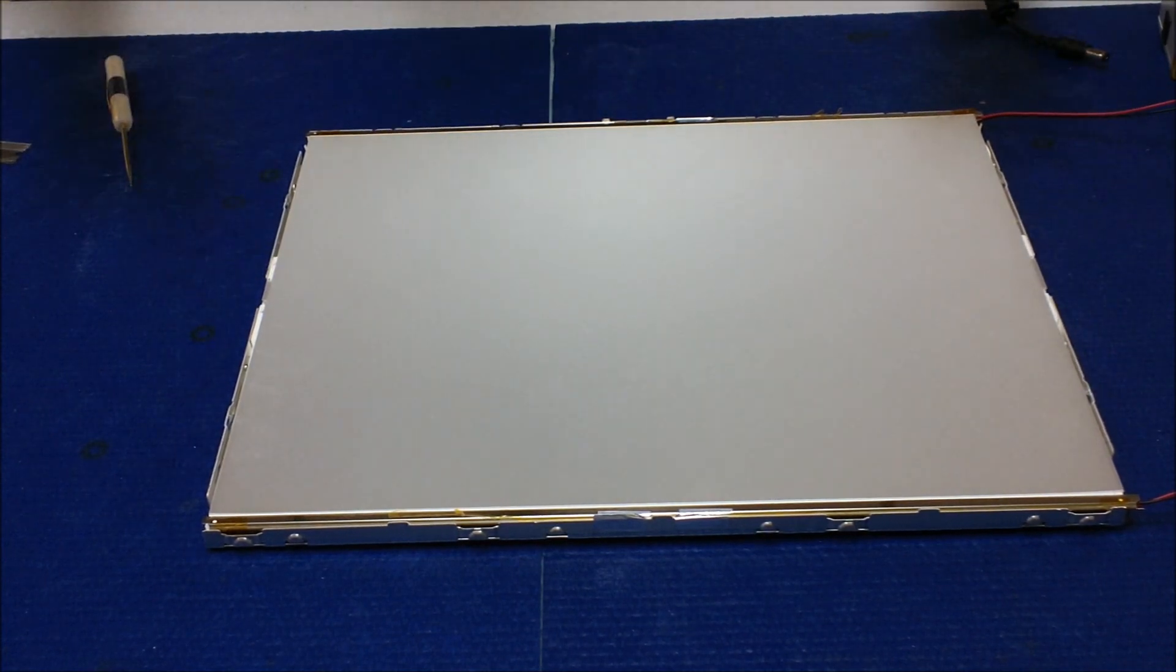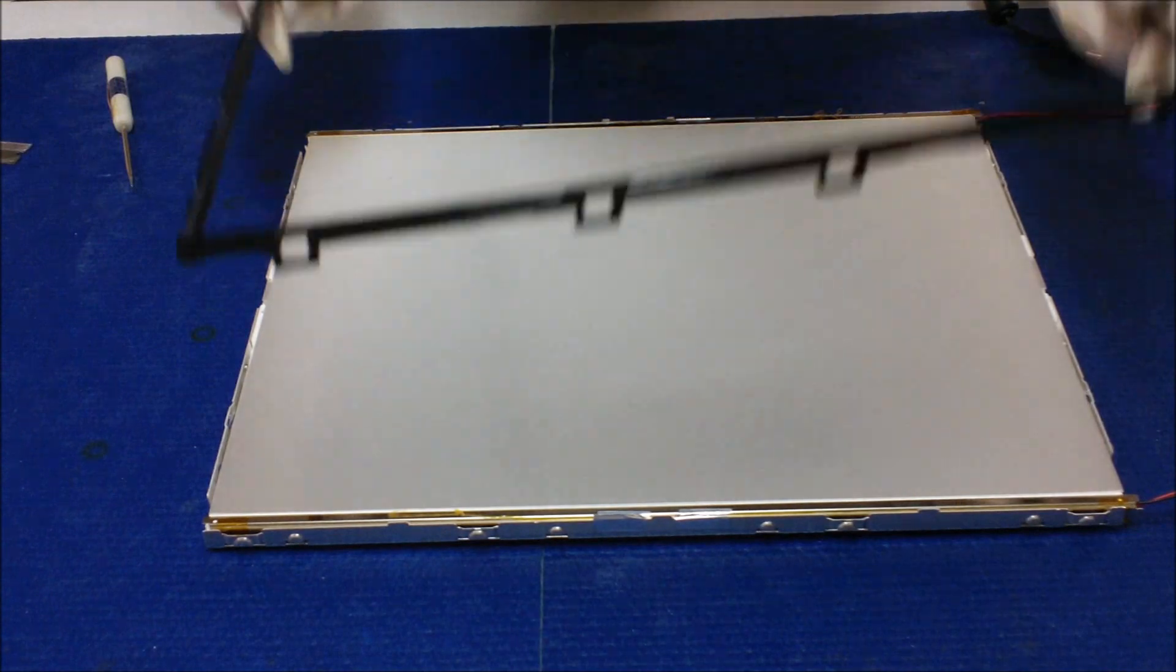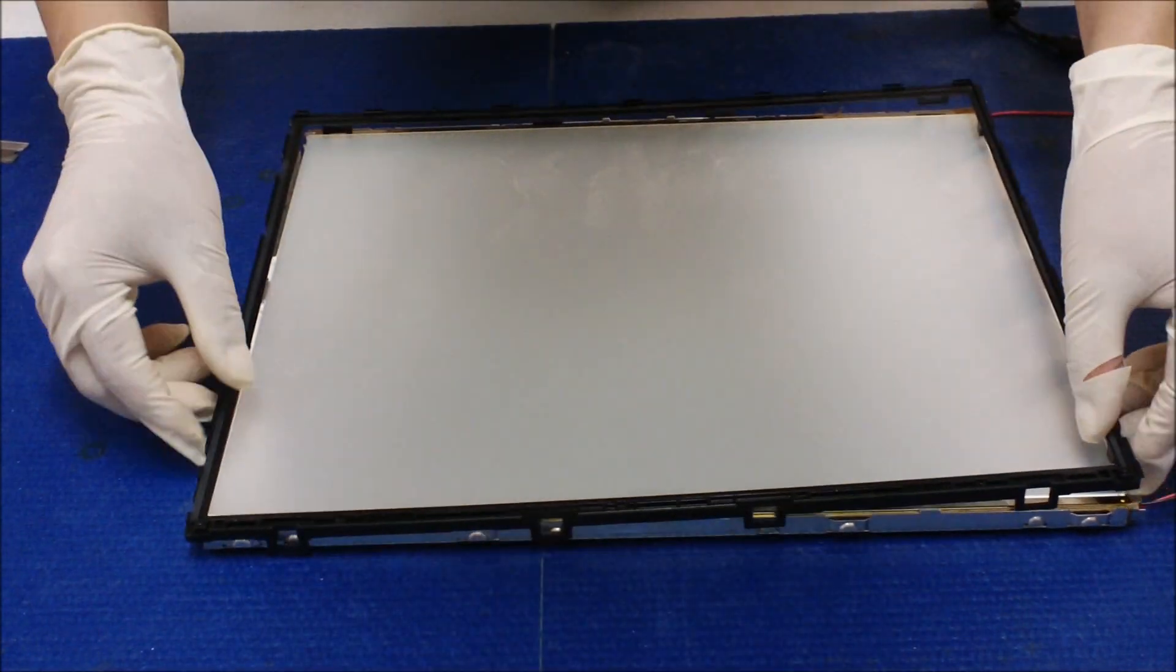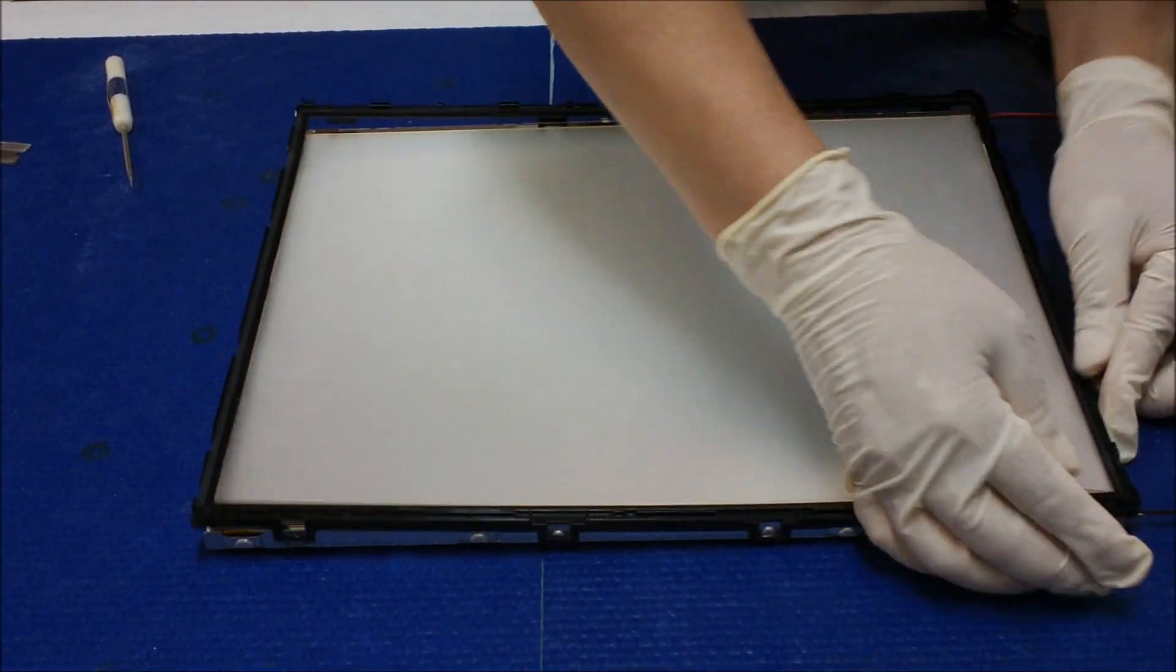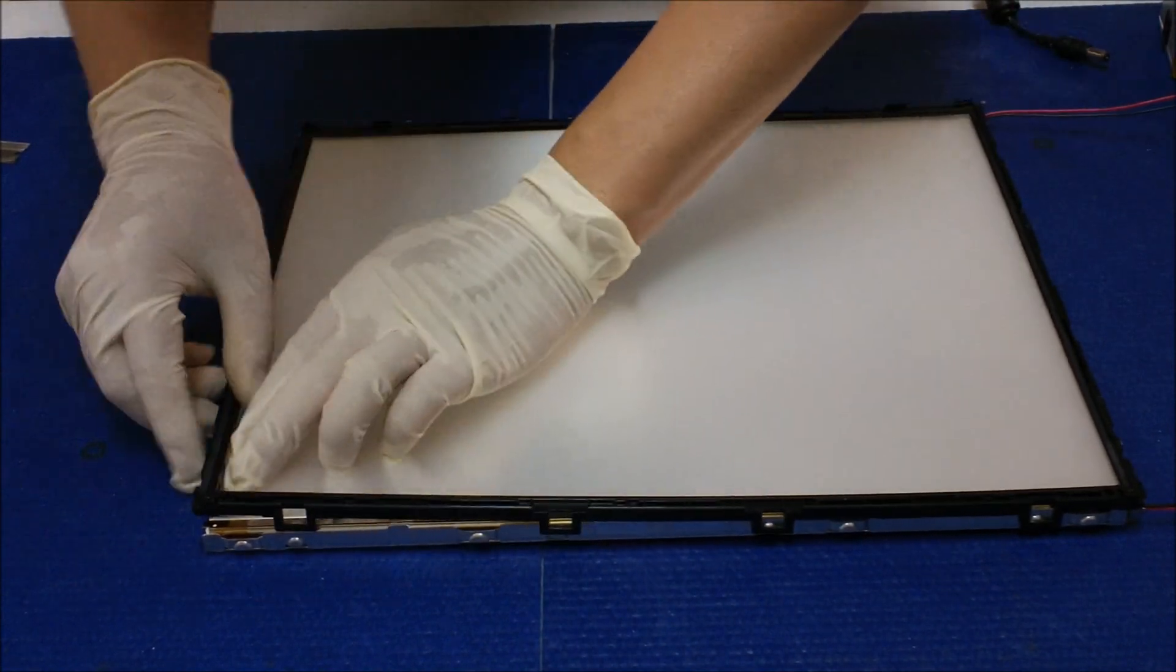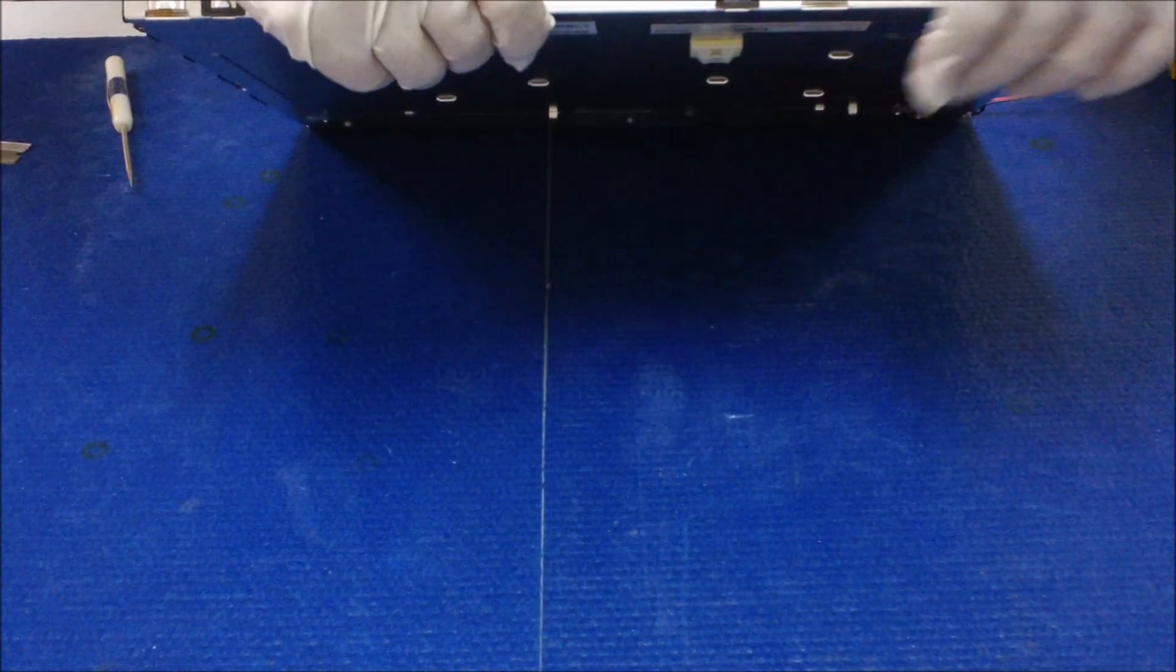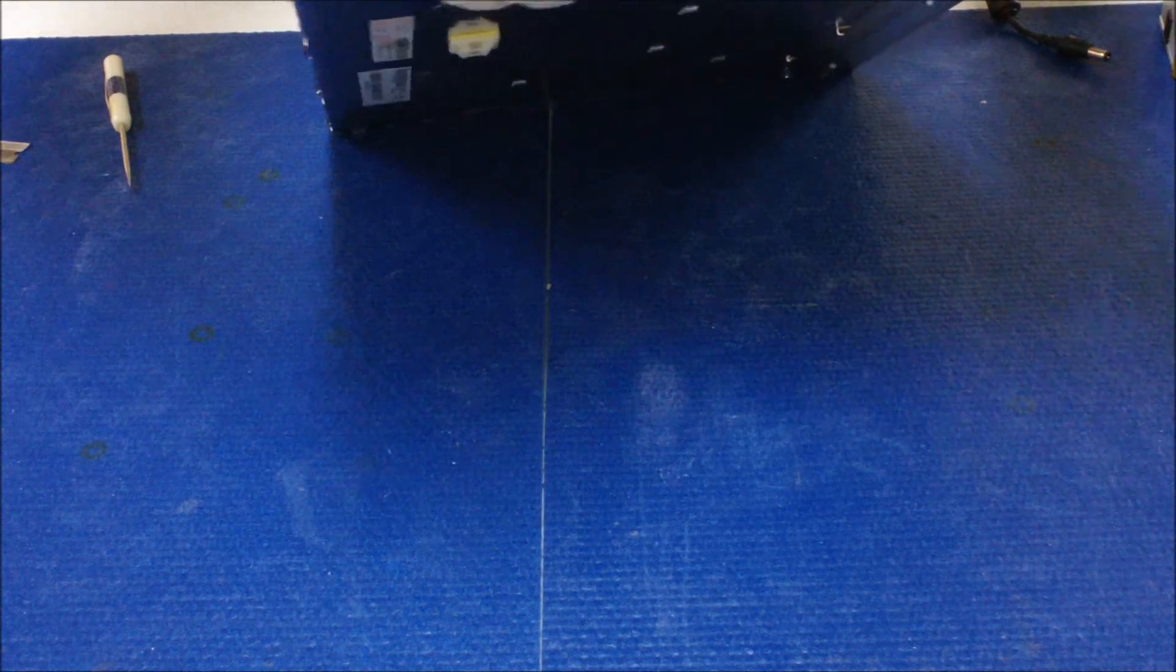So you just make sure which end goes which end first. This is the right end. That way. You just push it down. You can hear the snapping sound. That means the plastic will stick right back to the clip. Here you go. Check all four sides.